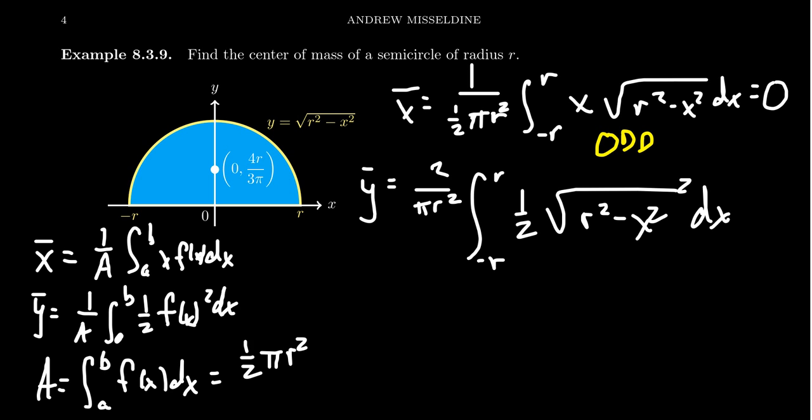There's some nice cancellation here. The one half here cancels with the two right there, and the square cancels with the square root. So we end up with, with those simplifications, one over pi r squared, the integral from negative r to r of r squared minus x squared dx. So that's a pretty good place to be.